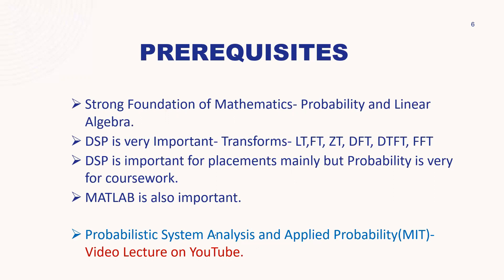The prerequisites include a strong foundation in mathematics, since we deal with statistical concepts here. Probability and linear algebra are very important — specifically, probability in terms of distributions like Gaussian distribution, binary distributions, and various probability distributions. Linear algebra is also important for Information Theory and Coding, where you encounter terminologies like entropy and mutual entropy.